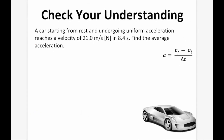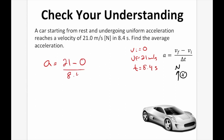Check your understanding: a car starting from rest undergoes uniform acceleration and reaches a velocity of 21 m/s north in 8.4 seconds. Find the average acceleration. Taking north as positive, vi = 0, vf = 21 m/s, t = 8.4 s. Using a = (vf − vi)/t = (21 − 0)/8.4 = 2.5 m/s². With two significant digits, the final answer is 2.5 m/s² north.